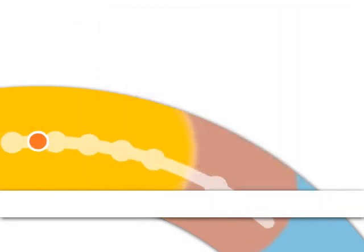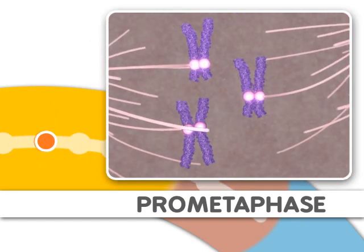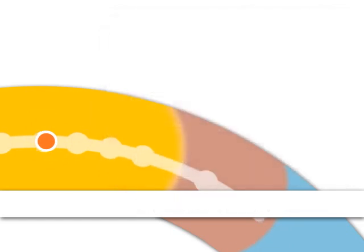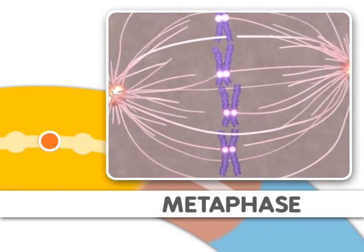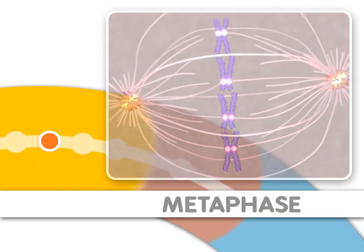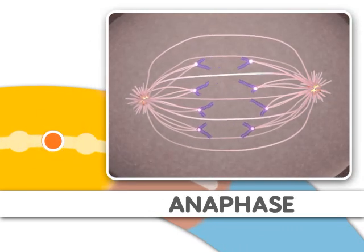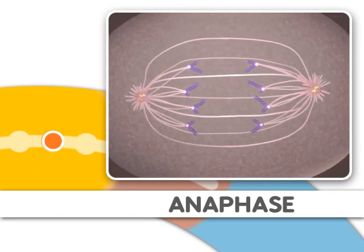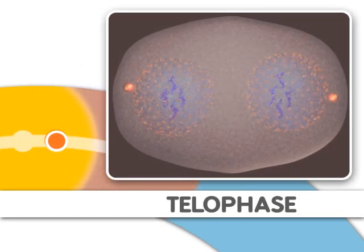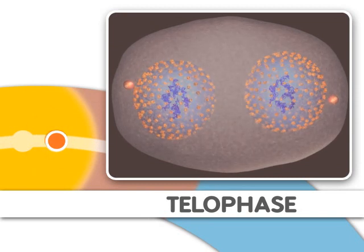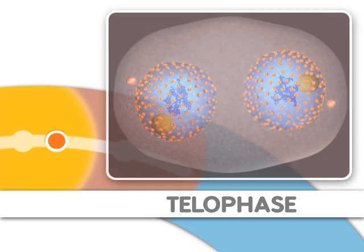Next comes prometaphase, where microtubules attach to the chromosomes. This step is followed by metaphase, where the chromosomes align. Metaphase is followed by anaphase, where the chromosomes separate. Finally, during telophase, nuclear membranes reappear around the two sets of chromosomes. Mitosis is now complete.